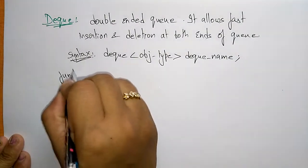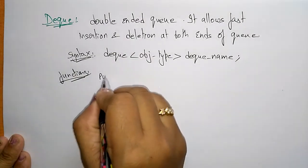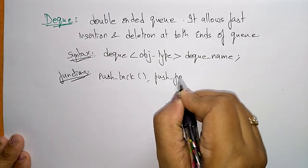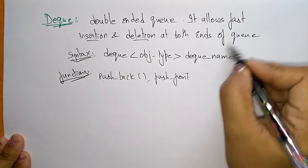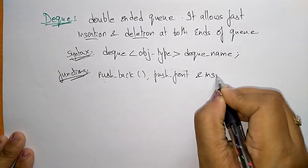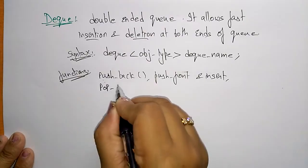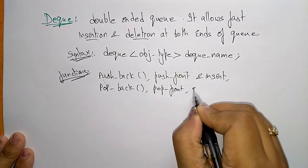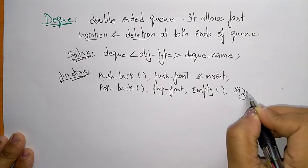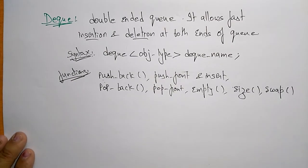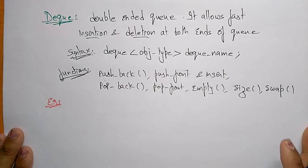The functions of the deque are: push_back, push_front — since insertion and deletion can take place at both ends of the queue — insert, pop_back, pop_front, empty, size, and swap. These are the different functions that can operate on the deque. Let me take one example and explain the deque with a program.